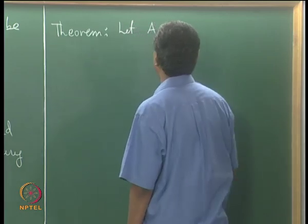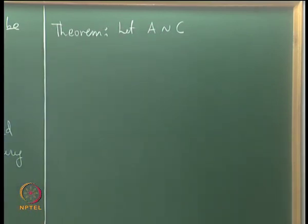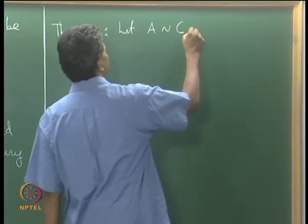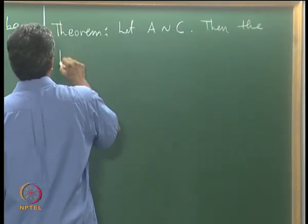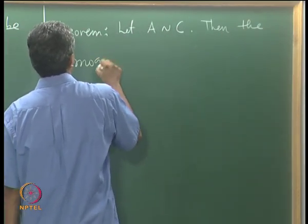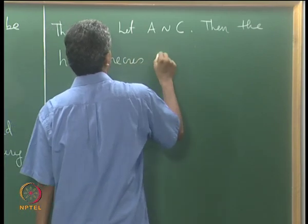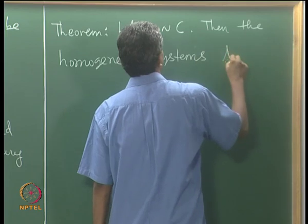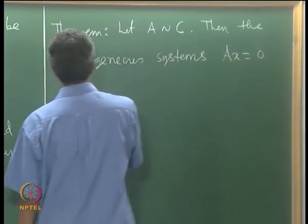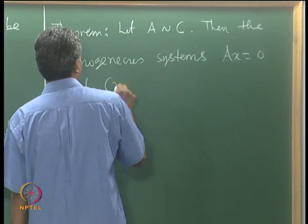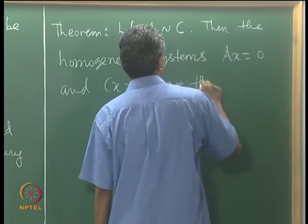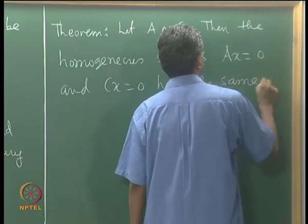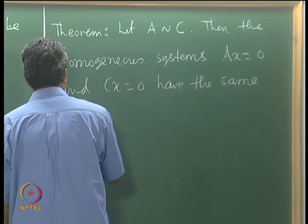Recall that A is row equivalent to B if B can be obtained from A by a finite sequence of elementary row operations, and this is an equivalence relation. Now the theorem: if A is row equivalent to C, then the homogeneous systems Ax = 0 and Cx = 0 have the same solution set.